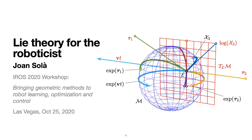Good morning everybody. My name is Joan Solà. I am a researcher at the Robotics Institute in Barcelona, mostly doing state estimation for mobile robotics. And this talk is about Lie theory. It's kind of a crash course on Lie theory, especially for those of you who have little or no notion about it.